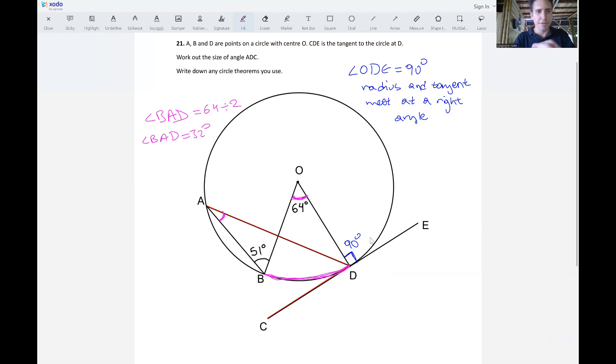So what was the circle theorem we use? Because we need to justify, we have a circle theorem which is that the angle at the center is twice the angle on the circumference. This is a simplified way of writing down this theorem, but it will serve our purposes just fine. So we know this angle is 32 degrees.